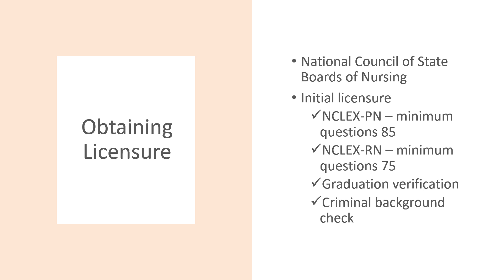NCLEX-RN and NCLEX-PN exams are graded as either a pass or a fail. The NCLEX-RN has three rules to determine if a candidate passes or fails; the 95% confidence interval rule is most commonly used. This rule determines the computer will stop giving the candidate items when it is 95% certain the candidate's ability is above the passing standard or clearly below the failing standard. The minimum number of questions for the NCLEX-RN is 75 and the maximum is 265. For the NCLEX-PN, the minimum is 85 and the maximum is 205.